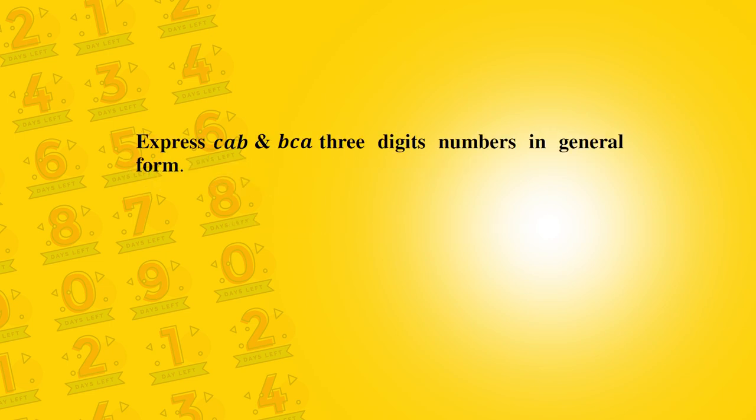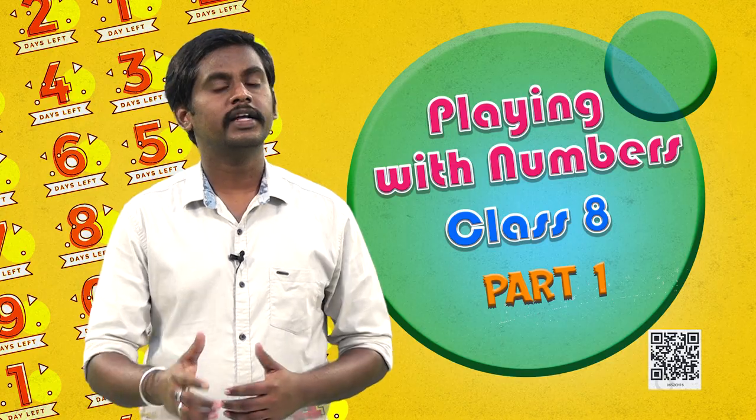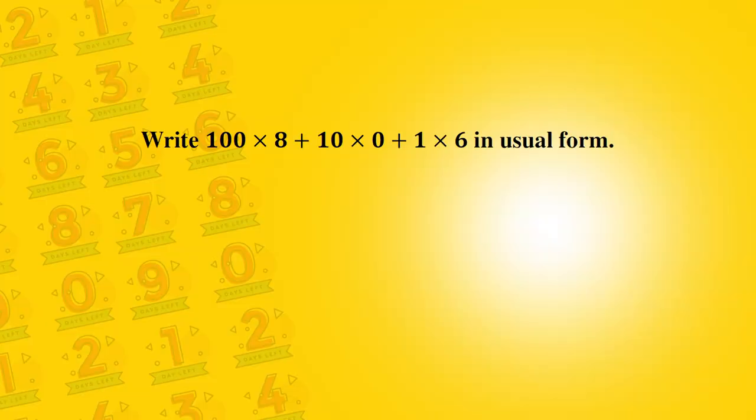Students, similarly, can you try to write for CAB and BCA? You observe that CAB is equal to 100 times C plus 10 times A plus 1 times B, and BCA is equal to 100 times B plus 10 times C plus 1 times A. Students, try to answer the following question: Write 100 times 8 plus 10 times C in usual form.